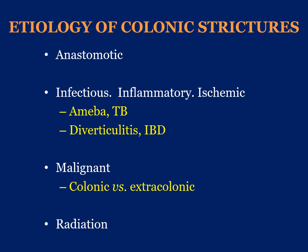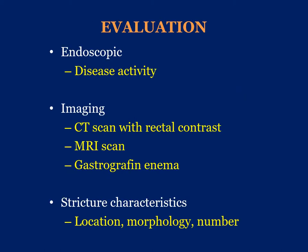Patients with prior history of radiation to the abdomen or pelvis can also present with strictures. I evaluate the patient with colonoscopy to assess for disease activity, especially for patients with inflammatory bowel disease. CT scan with rectal contrast is a great modality. An alternative is MRI scan of the abdomen and pelvis. Gastrographin enema is probably the most widely available diagnostic imaging test. We look at the characteristic of the stricture in terms of location, morphology, diameter, length, and whether it's a single or multiple strictures.